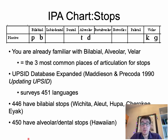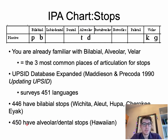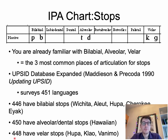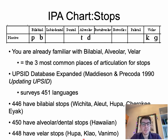Out of 451 languages, only one does not have alveolar or dental stops — we call these coronals because they are produced with the tip and blade of the tongue. Only Hawaiian does not have alveolars, which is quite unique. 448 languages have velar stops; the few exceptions include Hupa, Klao — a language in Liberia — and Banimo, a language in Papua New Guinea. These stops are quite common in the world's languages and exist in English.